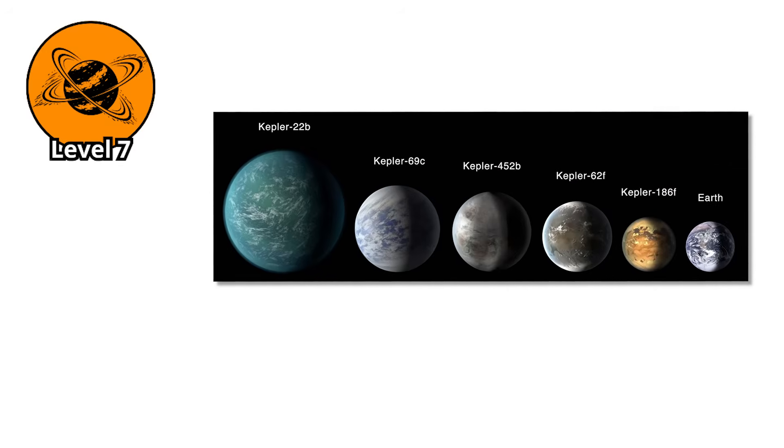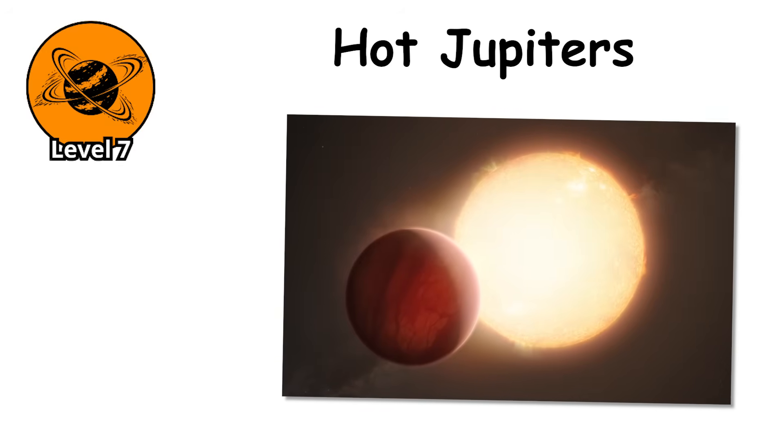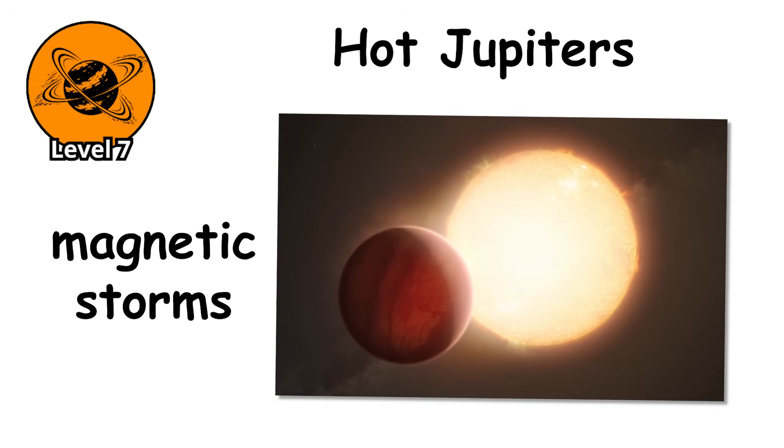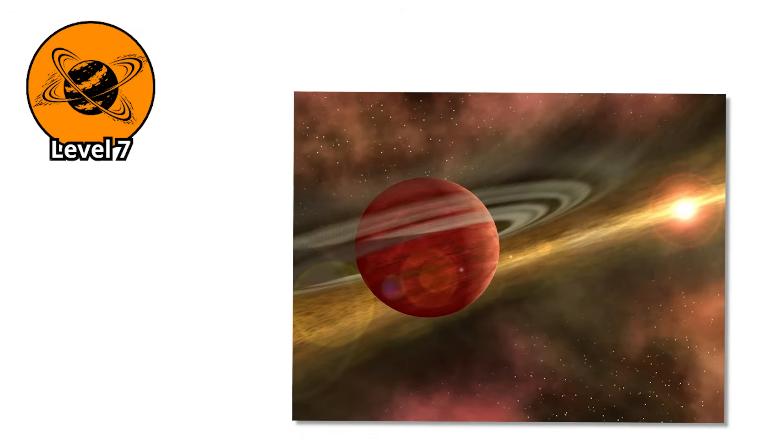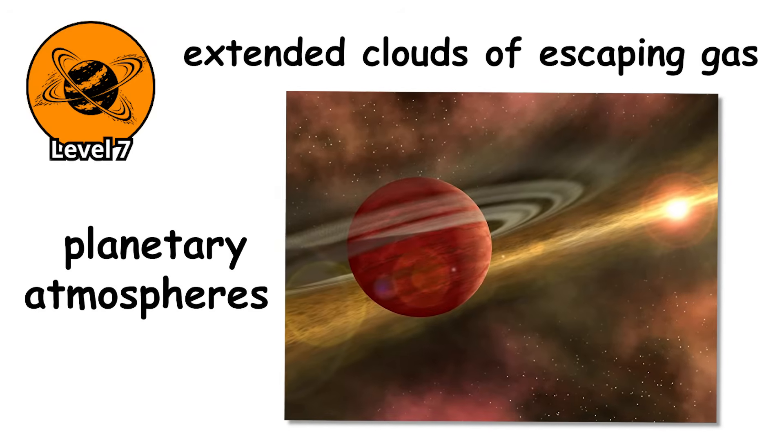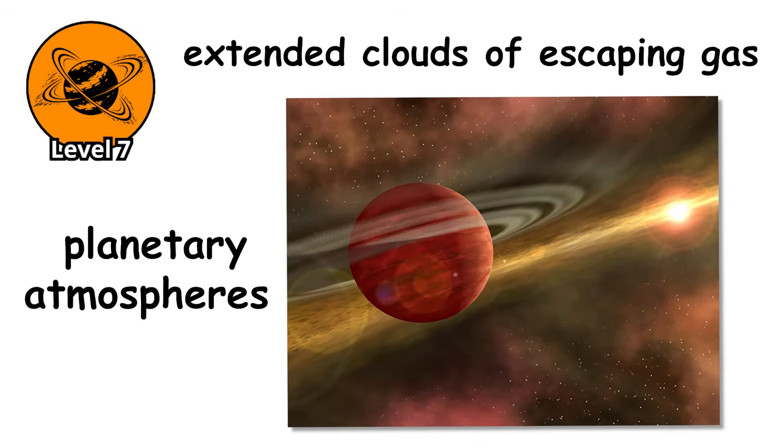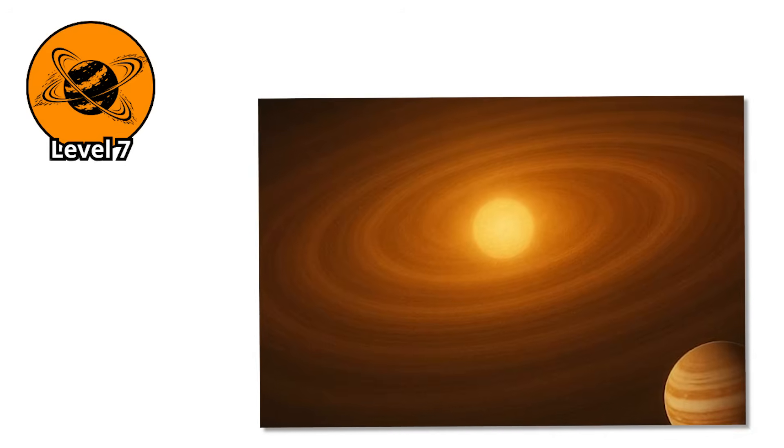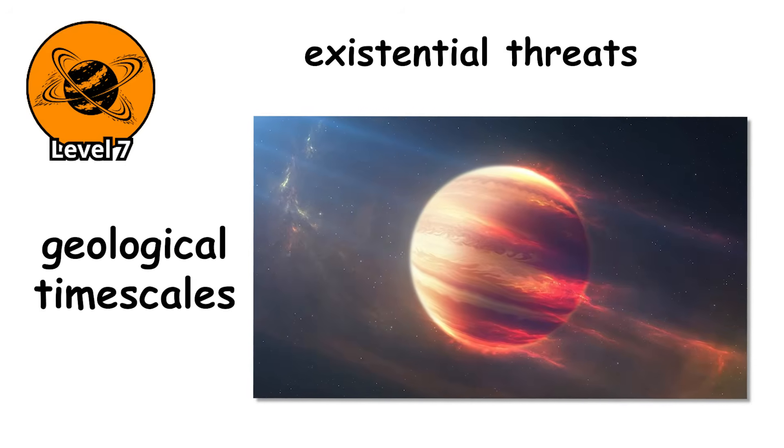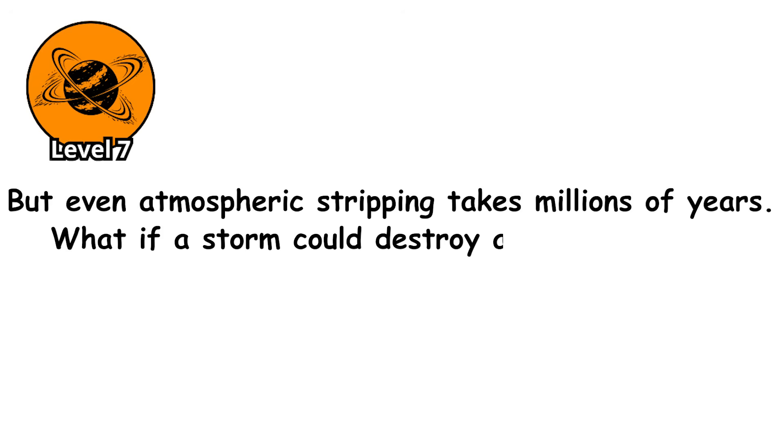Some exoplanets have it worse. Hot Jupiters orbiting close to active stars experience magnetic storms so intense that the planet's atmosphere is literally boiled off into space. We've detected extended clouds of escaping gas around some of these worlds, planetary atmospheres bleeding into the void, never to return. These aren't storms you can weather. They're existential threats that operate on geological timescales, slowly killing worlds. But even atmospheric stripping takes millions of years. What if a storm could destroy a planet in days?